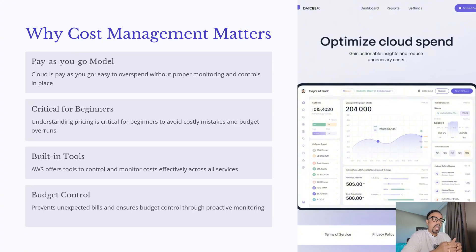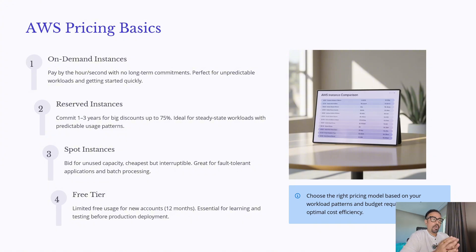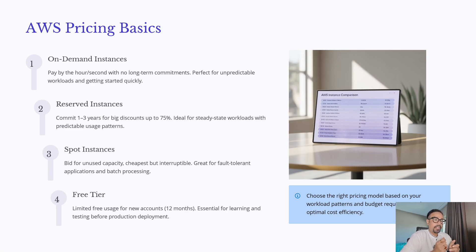Let's move ahead and look at the different AWS pricing models. AWS offers multiple pricing models and choosing the right one can have a huge impact on your cost efficiency. First we have on-demand instances — here you pay by the hour or even by the second with no long-term commitments. This is perfect when workloads are unpredictable or you are just getting started and need flexibility.